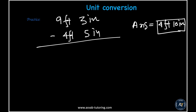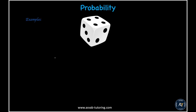Next topic is probability. In a dice game, a die has six sides. Probability is defined as P equals desired outcome over total number of outcomes.